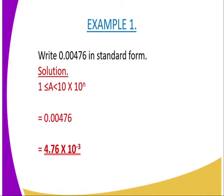You will write it as 4.76 times 10 to power negative 3, because the decimal point has shifted 3 decimal places toward the right hand side, so the power becomes negative 3.